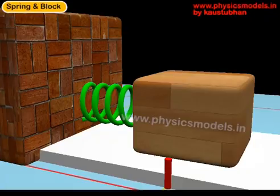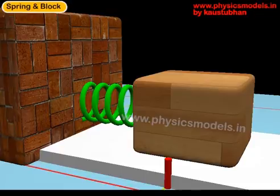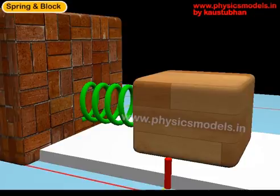Let's picturize the problem. Here in this image, you can see a wall. The spring is anchored to it, and the other end of the spring is connected to a block. The spring and block system is at rest, the spring is occupying its natural length, and the block is in its mean position.